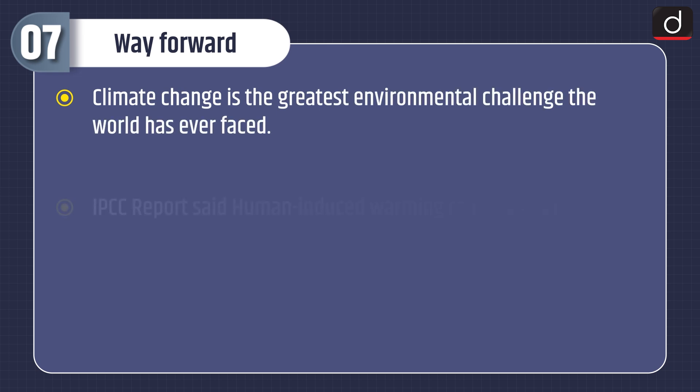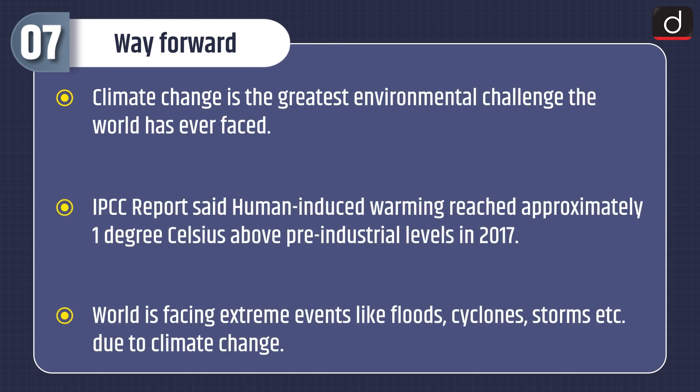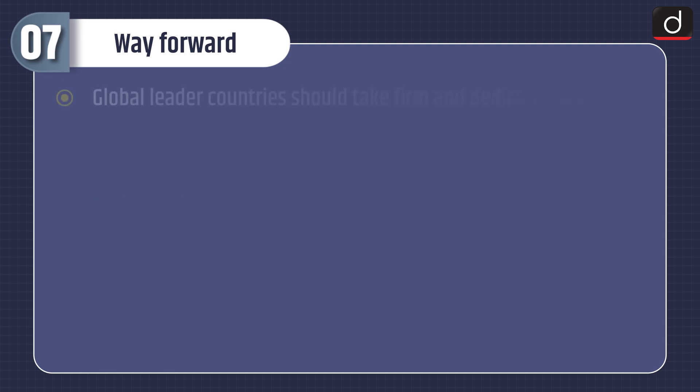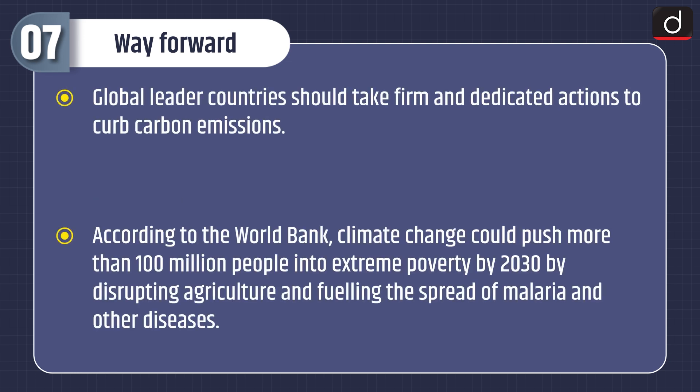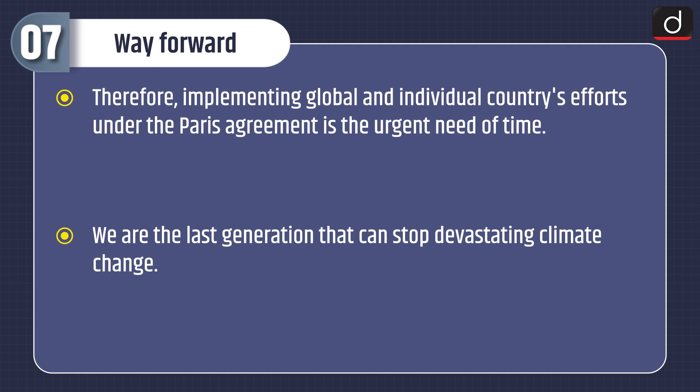Now let's move on to the way forward. Climate change is the greatest environmental challenge the world has ever faced. IPCC reports state that human-induced warming reached approximately 1 degree Celsius above pre-industrial levels in 2017. The world is facing extreme events like floods, cyclones, and storms due to climate change. Global leader countries should take firm and dedicated actions to curb carbon emissions. According to the World Bank, climate change could push more than 100 million people into extreme poverty by 2030 by disrupting agriculture and fueling the spread of malaria and other diseases. Therefore, implementing global and individual countries' efforts under the Paris Agreement is the urgent need of time. We are the last generation that can stop devastating climate change.